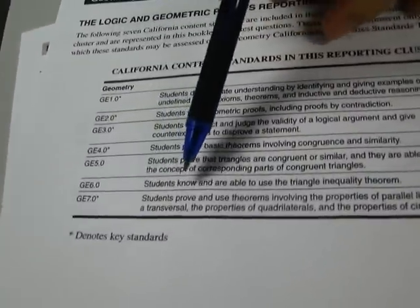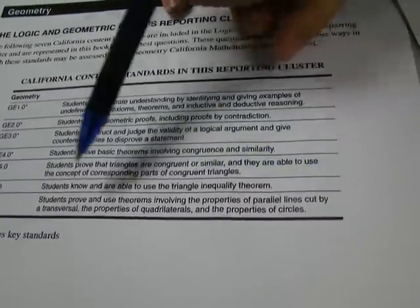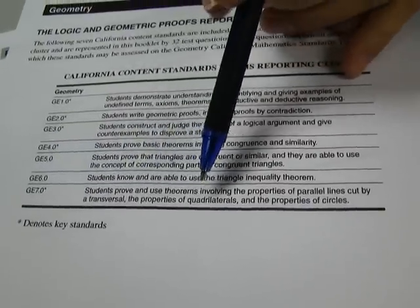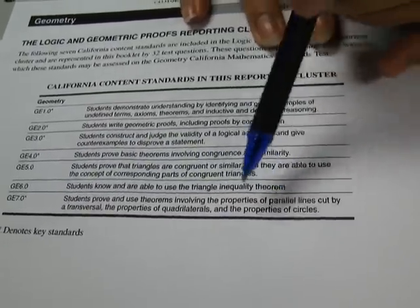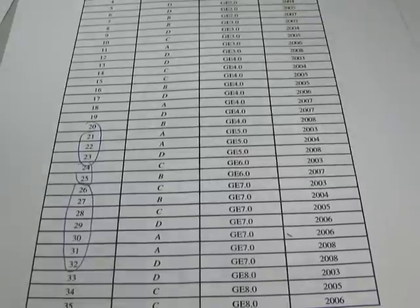Here's Standard 7. Students prove and use theorems involving the properties of parallel lines cut by a transversal, the properties of quadrilaterals, and the properties of circles. Standard 7 is going to be demonstrated in problems 26 through 32. So let's look at problems 26 through 32 in your packet.